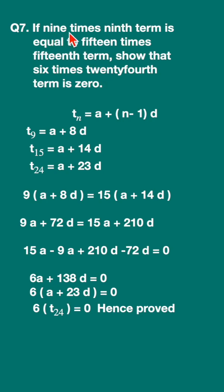Now let us see what is the condition. 9 times the 9th term, that means multiply the 9th term by 9. See here, I have multiplied 9 into the 9th term, a plus 8d.